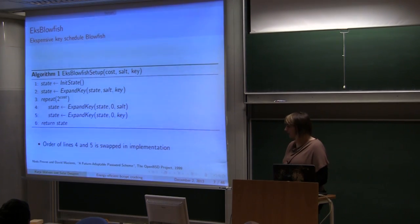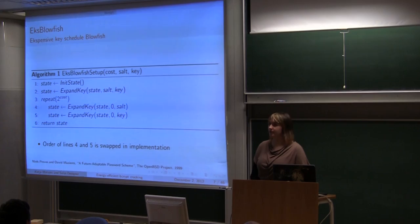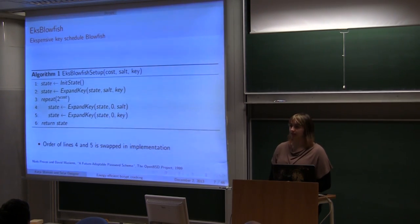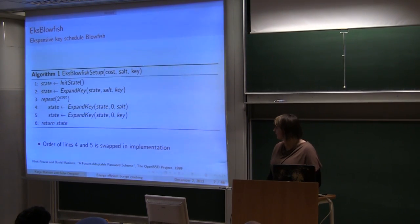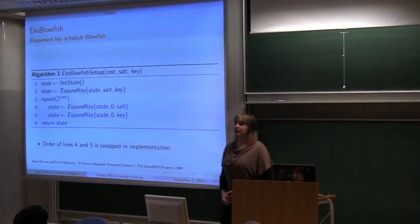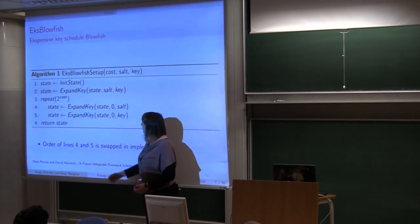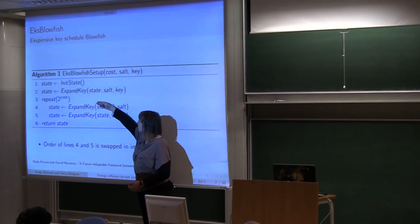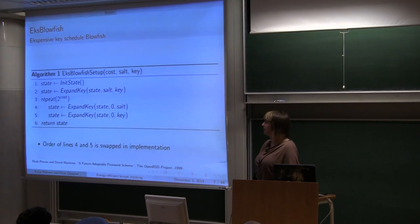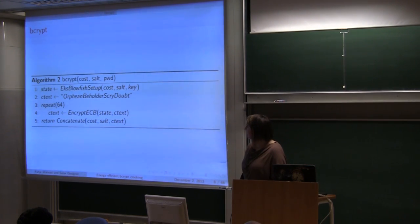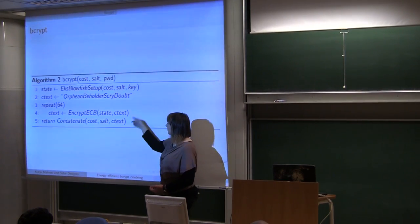Expensive Key Schedule Blowfish algorithm in its state initializes S-Boxes with the digits of number Pi. And then with Expand Key, all three of them, what they do is they replace P-Boxes and S-Boxes two at a time. So every one of these Expand Keys does Blowfish encryption 1042 times to replace all entries in the P-Boxes and four S-Boxes. The most costly part of this algorithm is this repeat 2 to the power of cost, where this Expand Key is repeated over and over again. Bcrypt algorithm itself uses Expand Key Blowfish Setup. And then the state that's returned with this part is encrypted with the following string and returned as a hash.